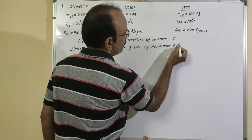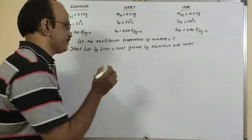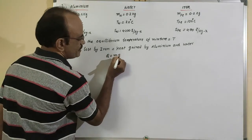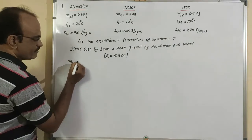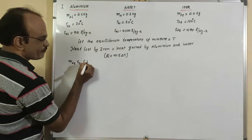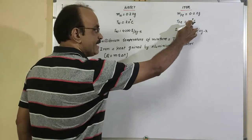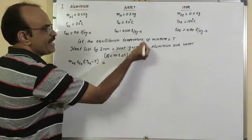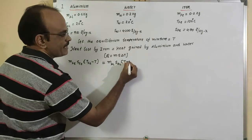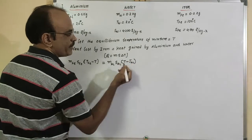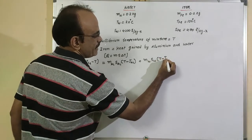The formula is Q = m·s·ΔT. Applying this for iron: heat lost = mass of iron × specific heat of iron × (temperature of iron − resultant temperature T). This equals heat gained by aluminum: mass of aluminum × specific heat of aluminum × (T − temperature of aluminum), plus heat gained by water: mass of water × specific heat of water × (T − temperature of water).